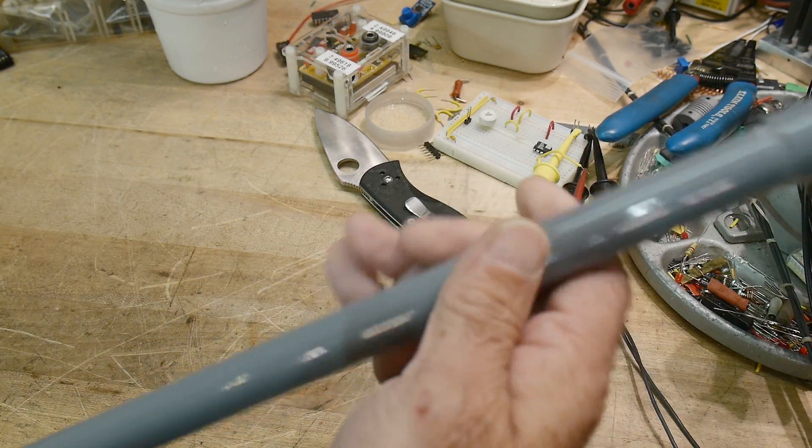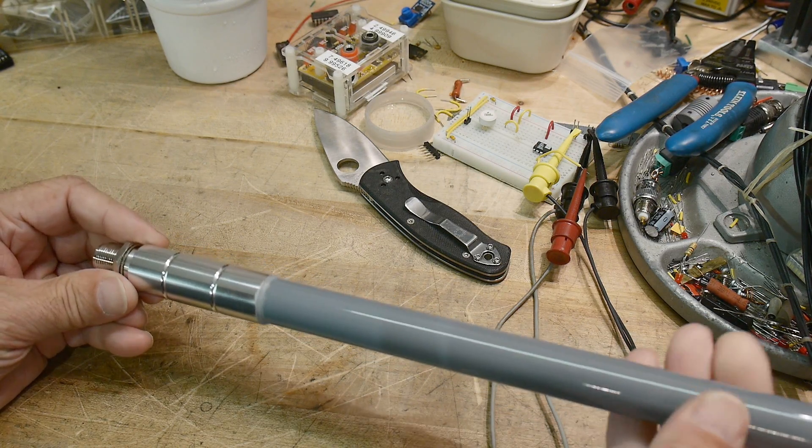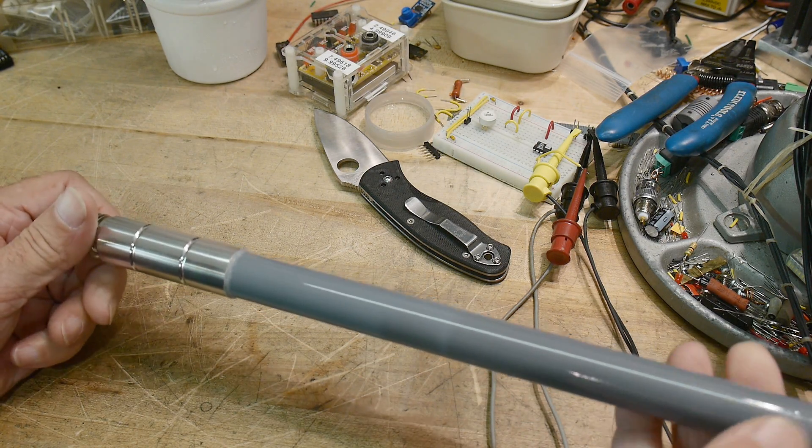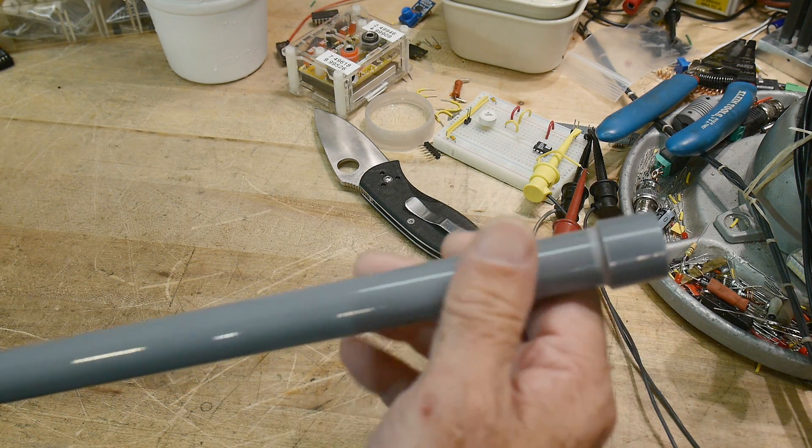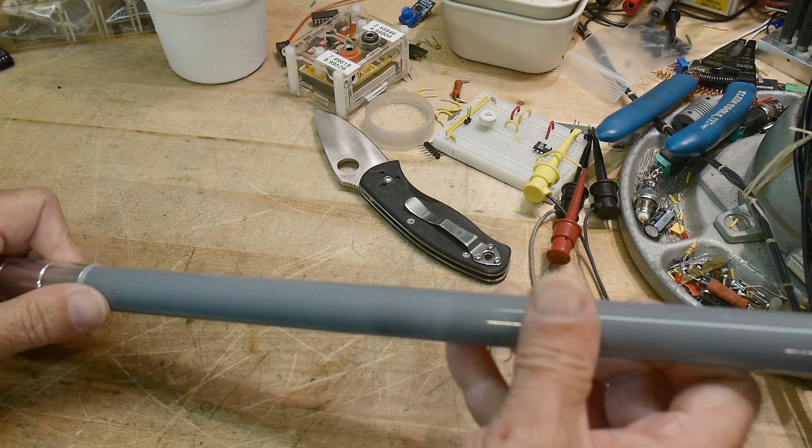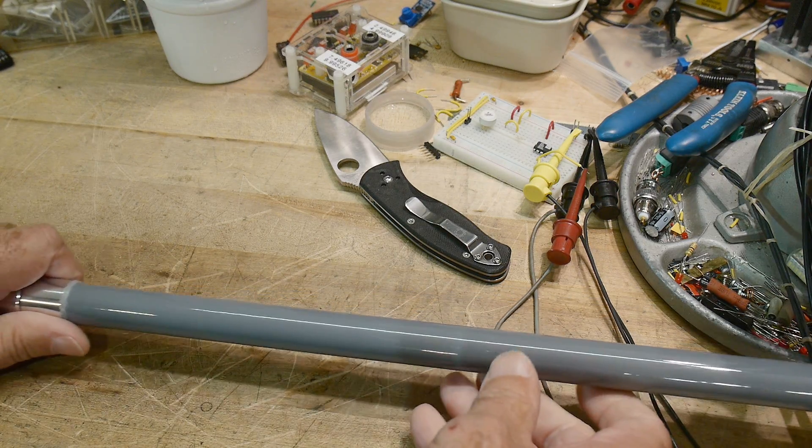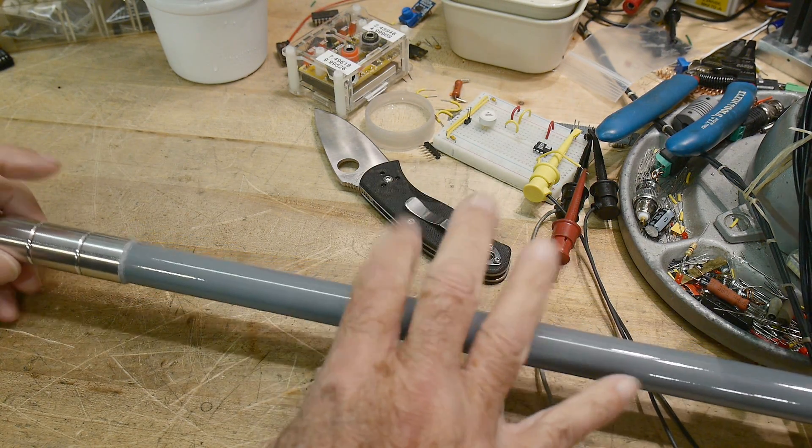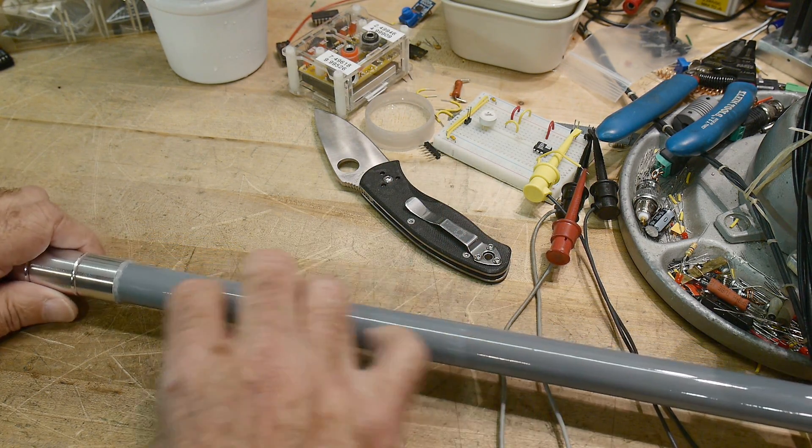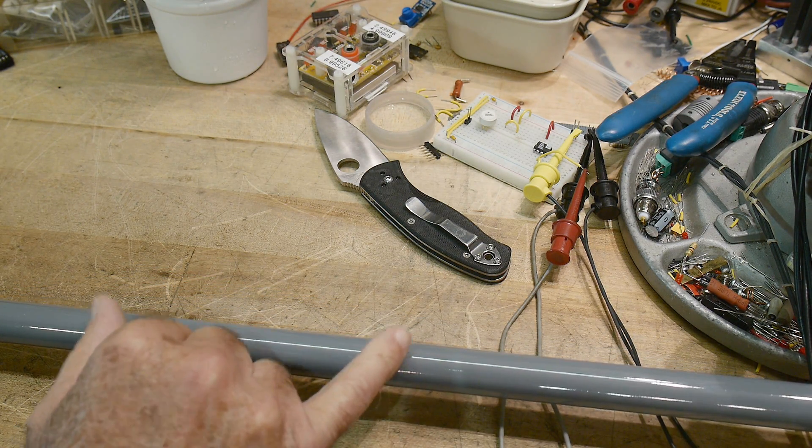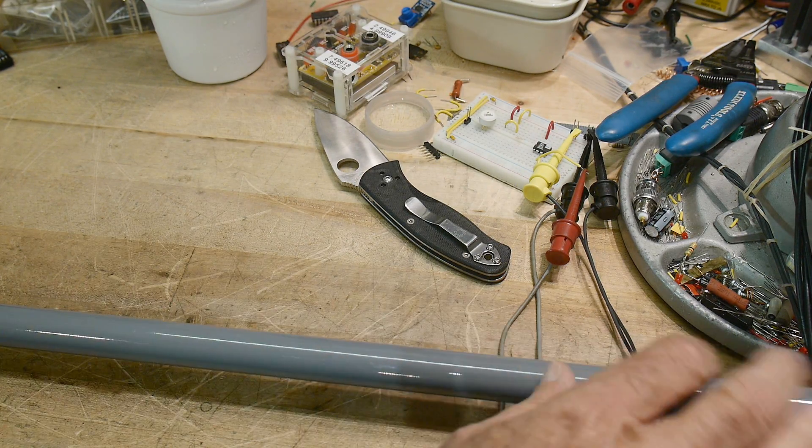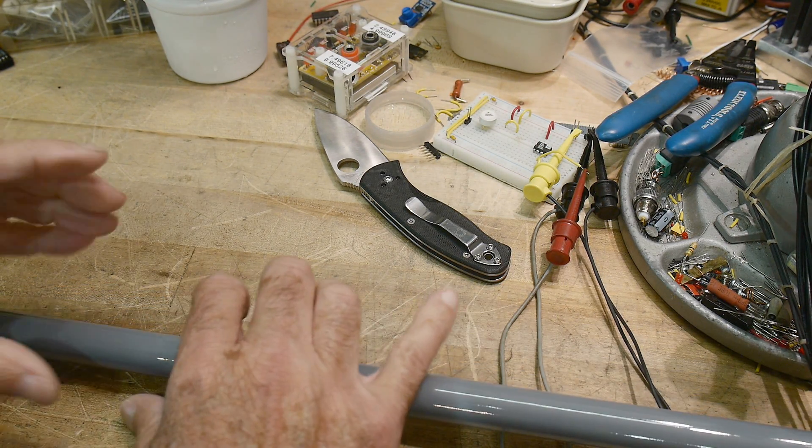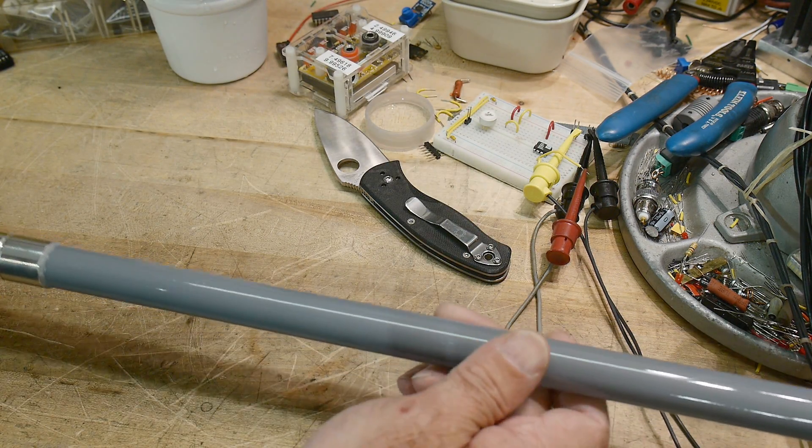Today what we're going to do is we're going to measure the antenna. We will see what type of return loss we get out of it. I'm not going to measure the gain because I don't have the right equipment to be able to do that. Maybe we'll open it up and see how it's constructed inside. Let's go ahead and measure it now.